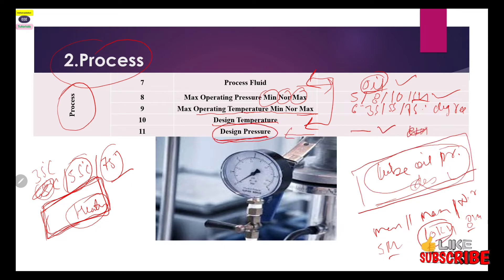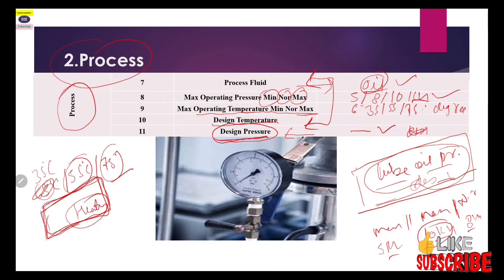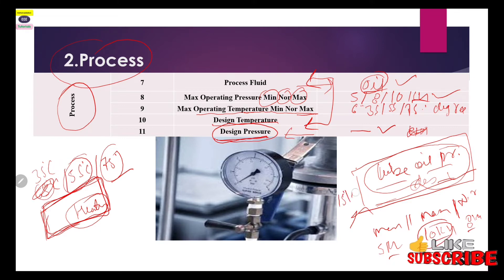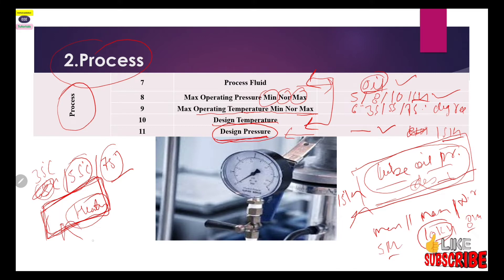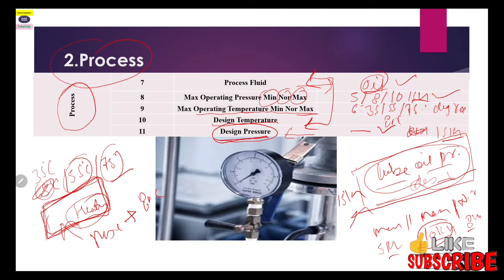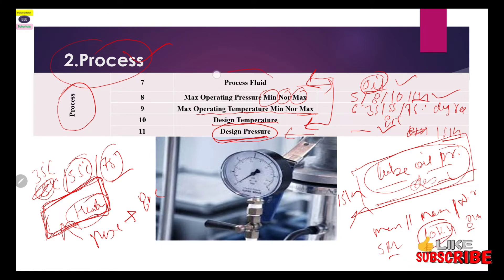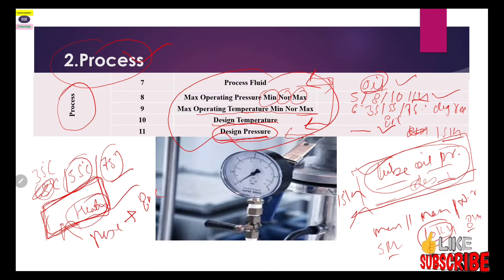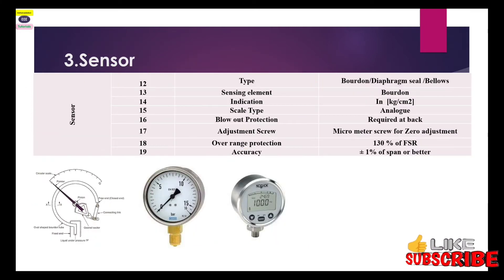Design pressure and design temperature are also mentioned in the data sheet. If you are writing design pressure for your gauge, you check the data sheet of your lube oil pump. If the pump design pressure is 15 kg, you write 15 kg here. If the design temperature of your reservoir is 80°C, you write 80°C. All these process-side specifications should come from the process team.